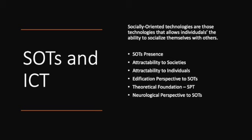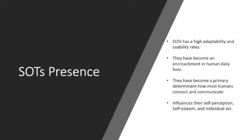We're going to talk about how social-oriented technologies has a neurological influence on individuals based on their level of usability as well. Social-oriented technologies and their presence is based on the adaptability and usability rates.